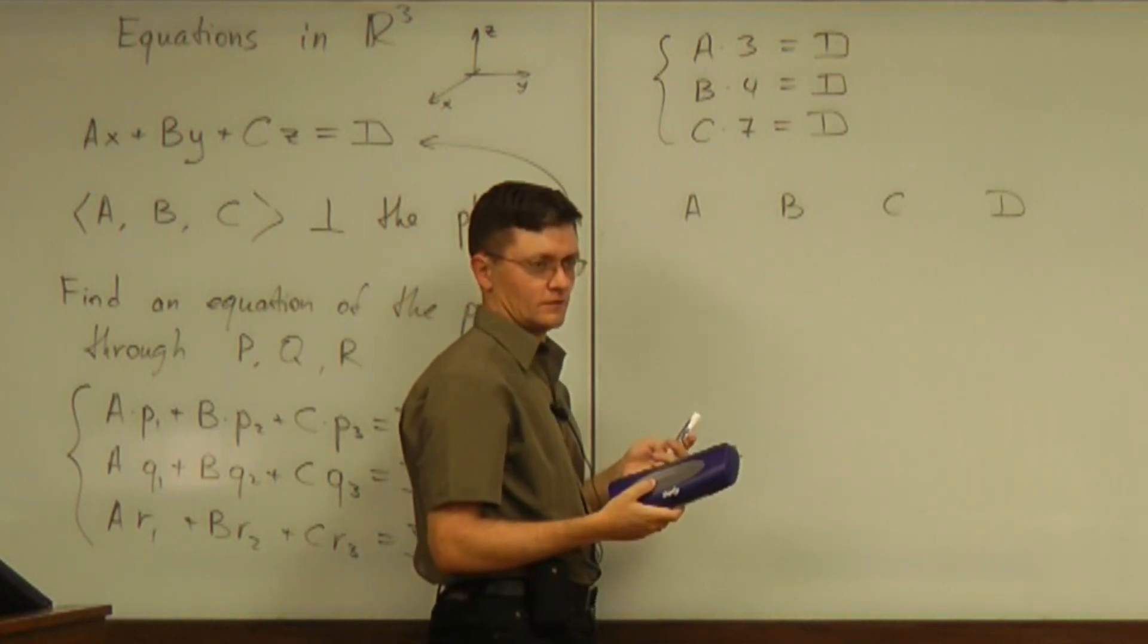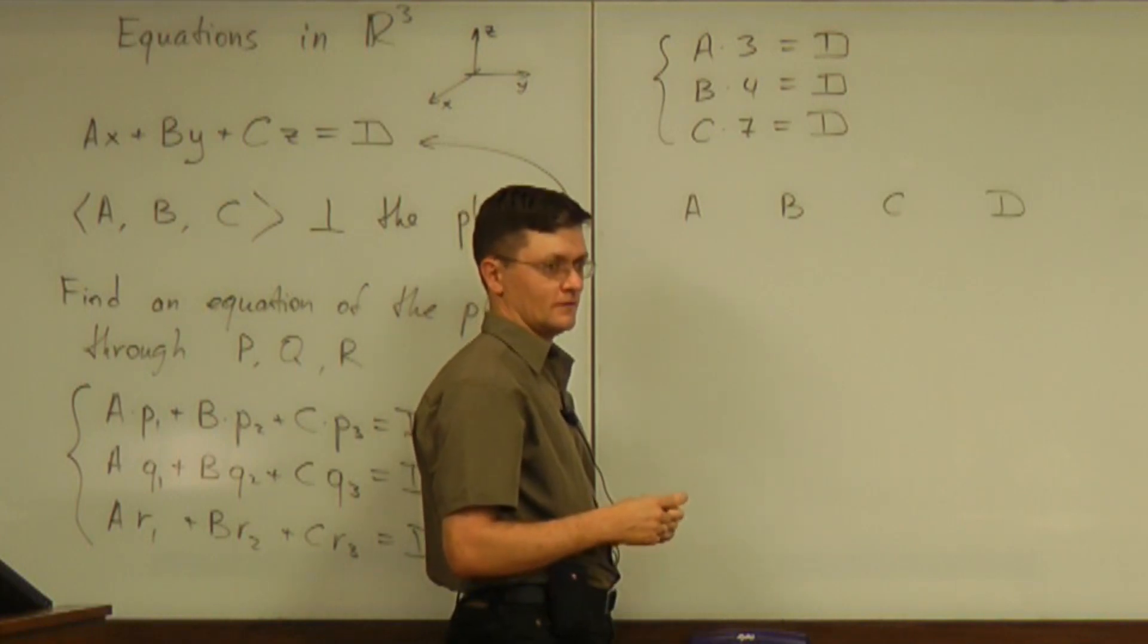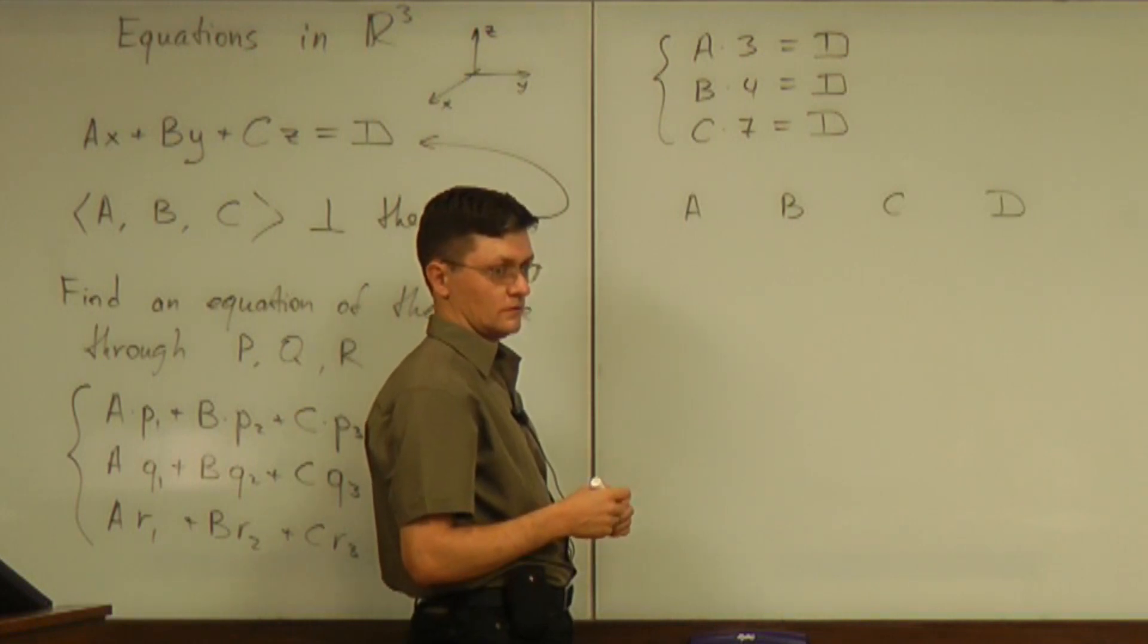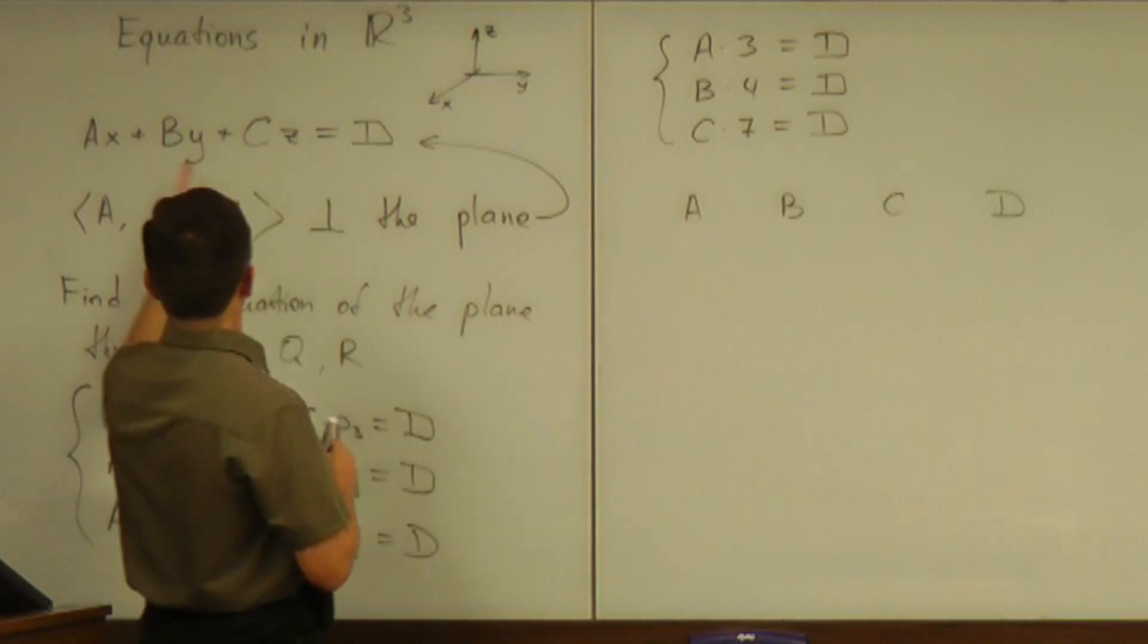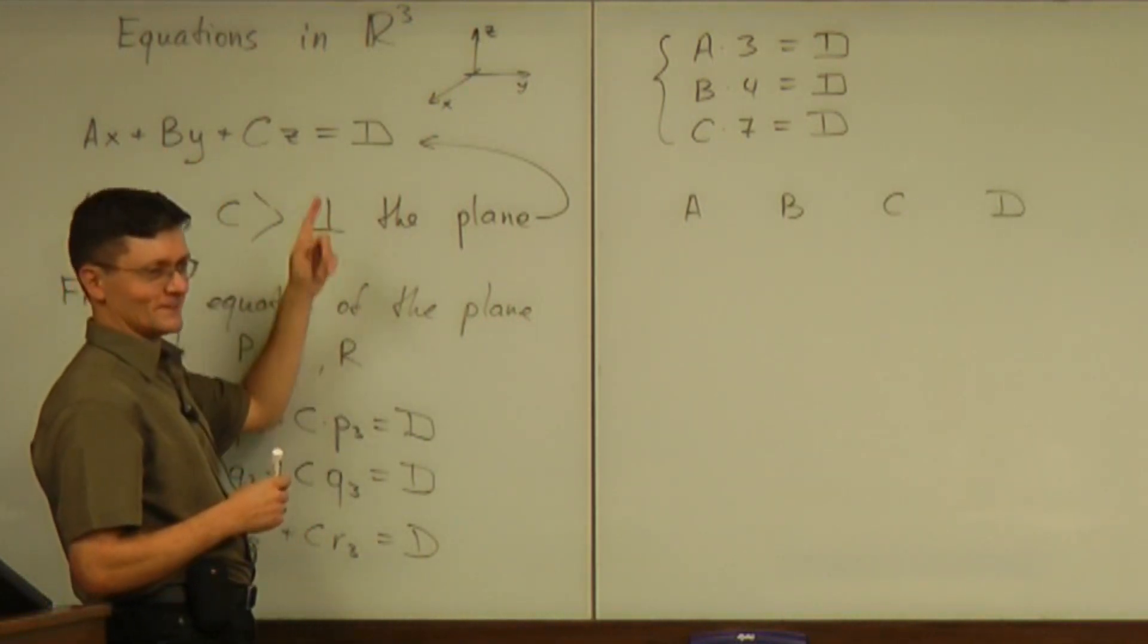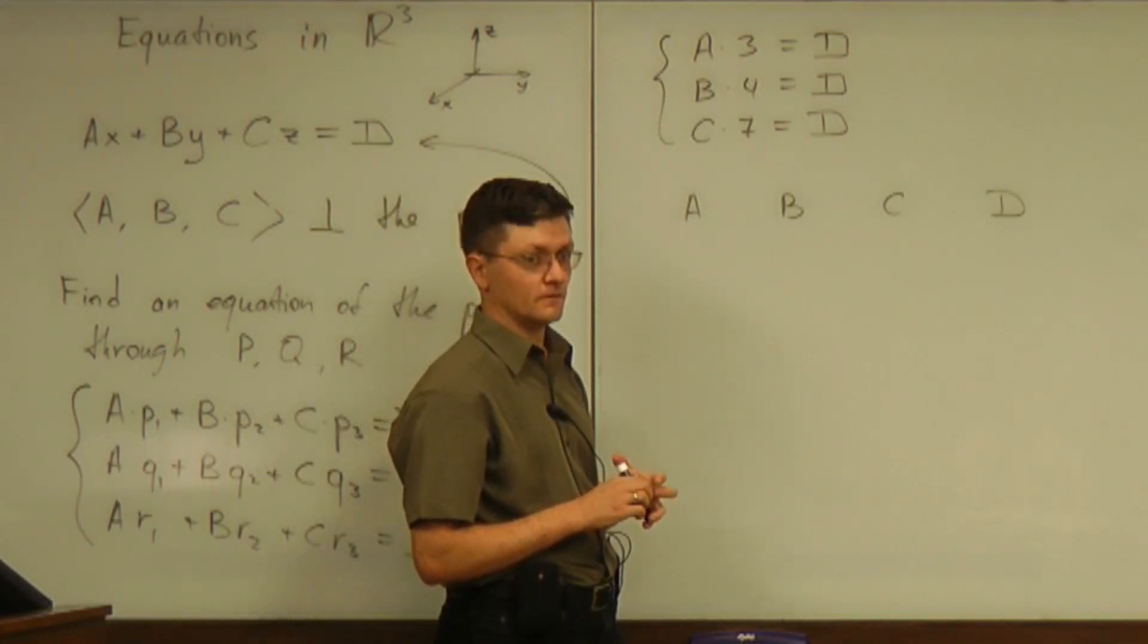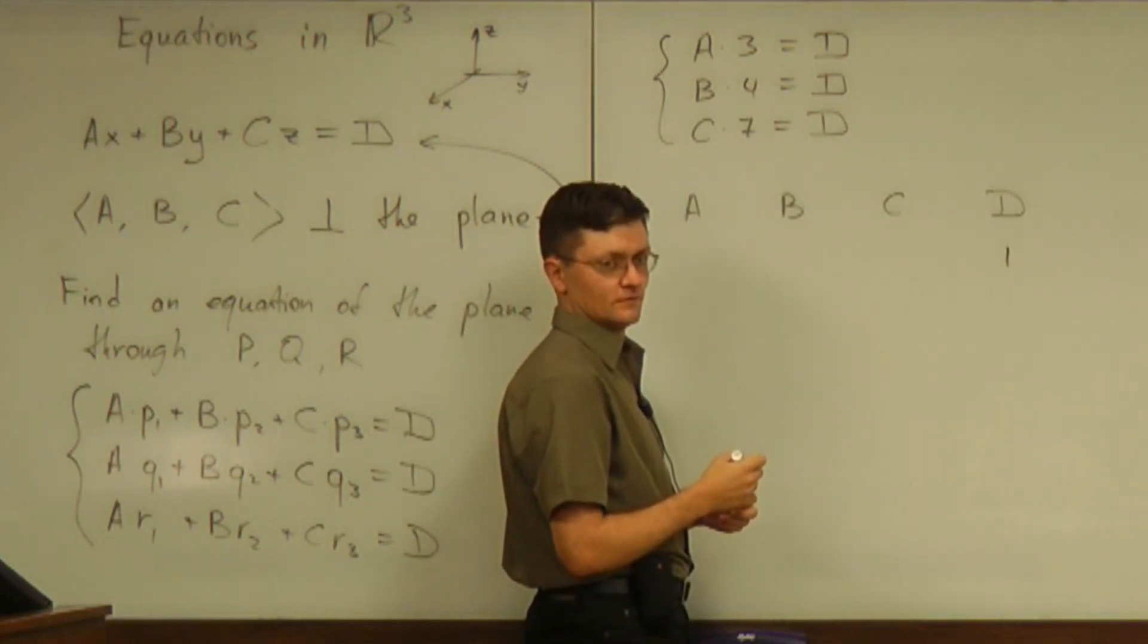Well, that's one solution, right? Can you give me more? Is there any other solution? Infinity. Infinity? If all those were infinity, then my equation would be infinity x plus infinity y. That's not really an equation. You have D equal to one. So you make D equal to one.